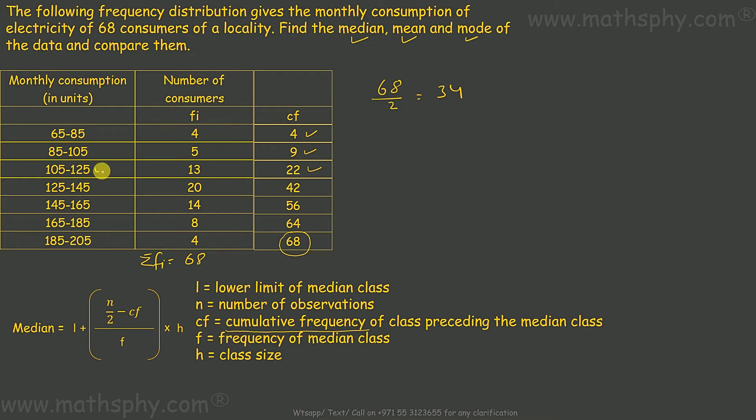Now, this class here ends up by this frequency 22. After 22 till 42, we have everything in this range. This 34 also lies in this cumulative frequency, in this frequency. So the median class would be 125 to 145. From the given number 34, our median class would be 125 to 145.